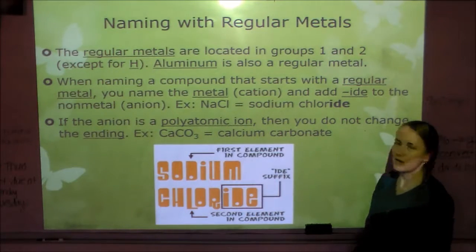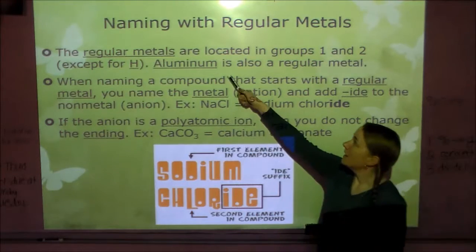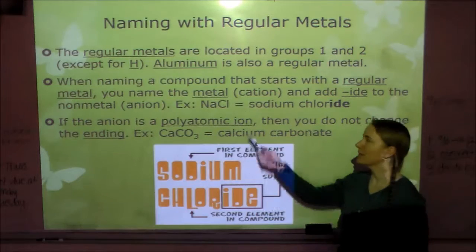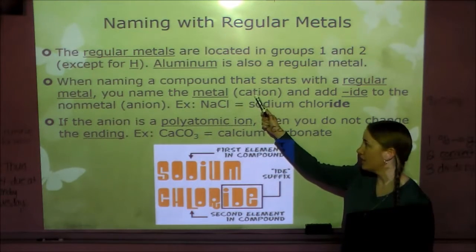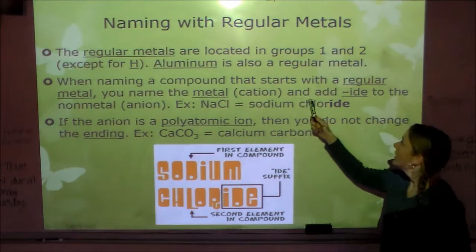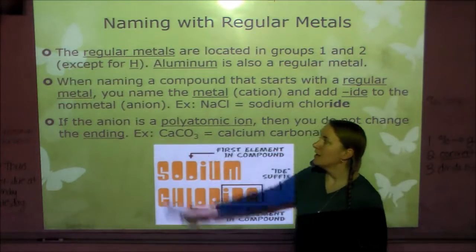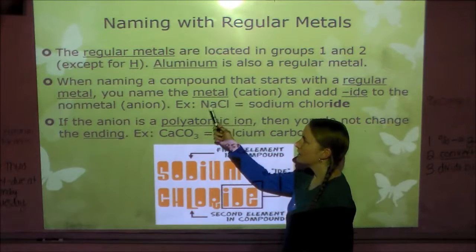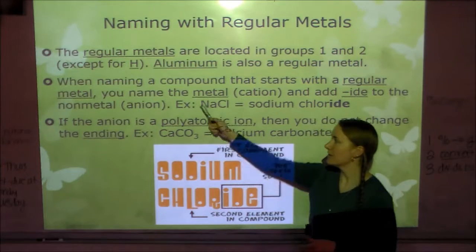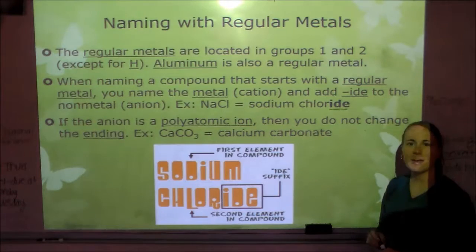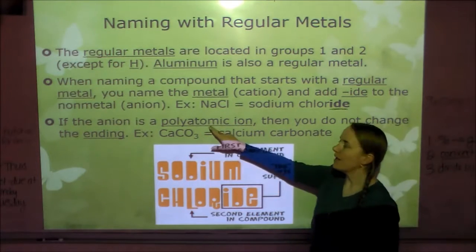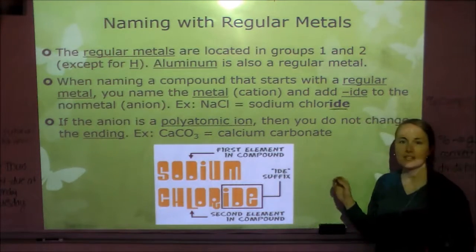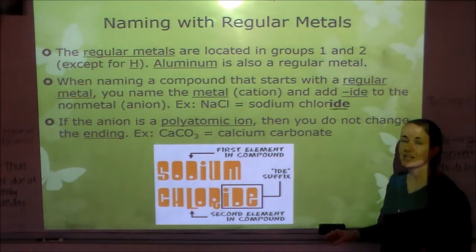For regular metals — located in groups 1 and 2, not hydrogen, and aluminum — when naming a compound you name the metal or cation without changing it. Sodium, potassium, calcium all stay the same. Then add -ide to the nonmetal or anion. So chlorine becomes chloride, nitrogen becomes nitride. NaCl is sodium chloride. However, if you have a polyatomic ion, you do not change the ending — Ca with CO₃ is calcium carbonate. Polyatomic ions keep the ending that's on your chart.